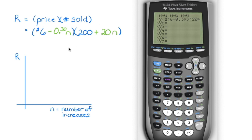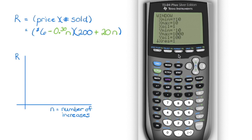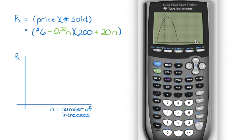We graph the function in factored form — going into y equals and entering it exactly as we see it. Don't forget the N in both brackets, otherwise it won't be quadratic and you'll end up with a linear equation. The window from the last problem may need adjusting. We can see we need to go up on the y maximum and over on the x maximum. Let's try x maximum of 50 with a scale of 10, and y maximum of 1,500.